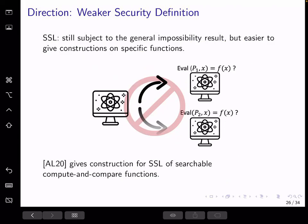In general, even though SSL actually still does not get around the general impossibility result for copy protection, it makes it easier for us to build construction for specific families of functions in the plain model without oracles. For example, in the same paper, AL20, they give the construction for subclass of evasive functions called compute and compare, which is an extension, as we mentioned before, of point functions.